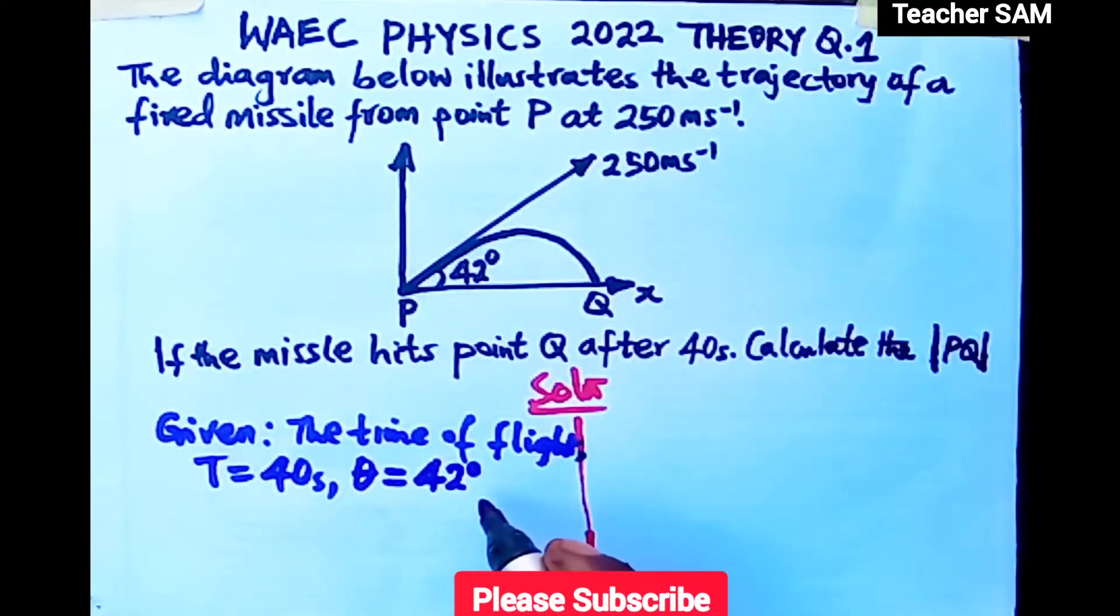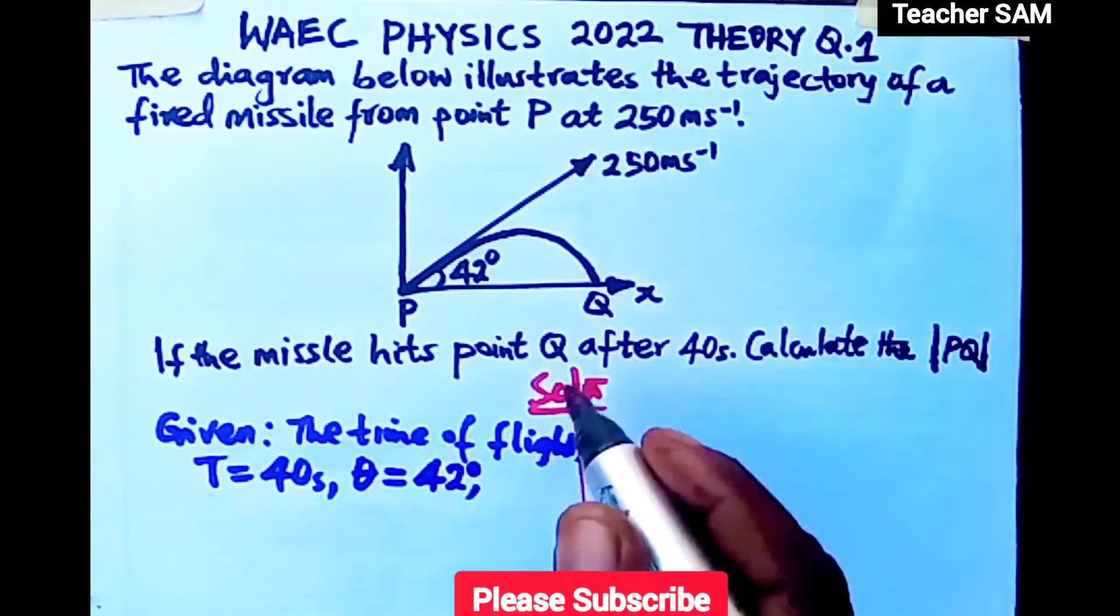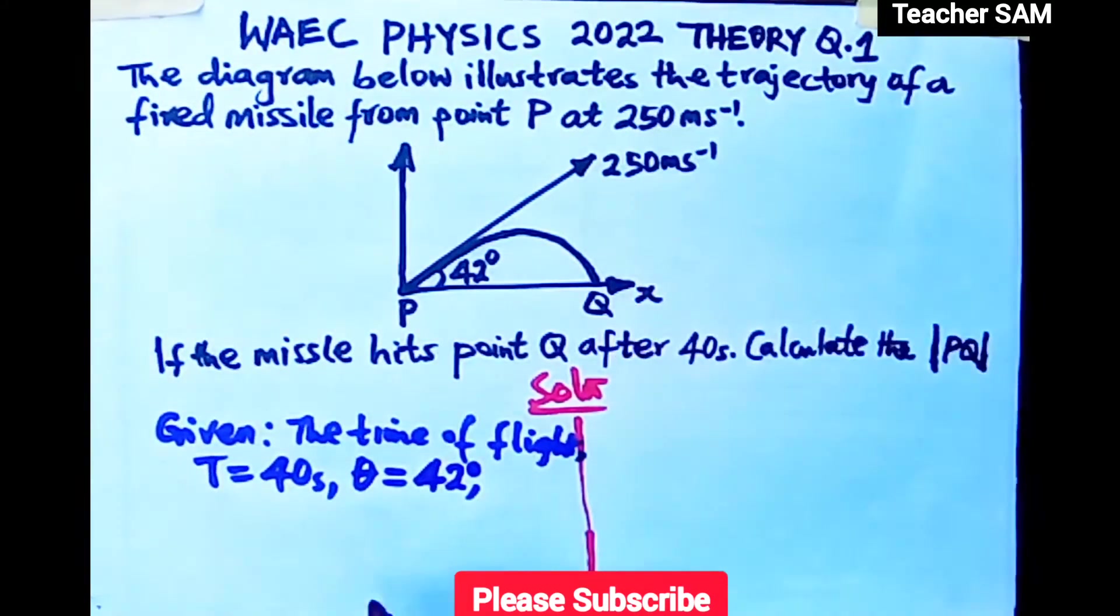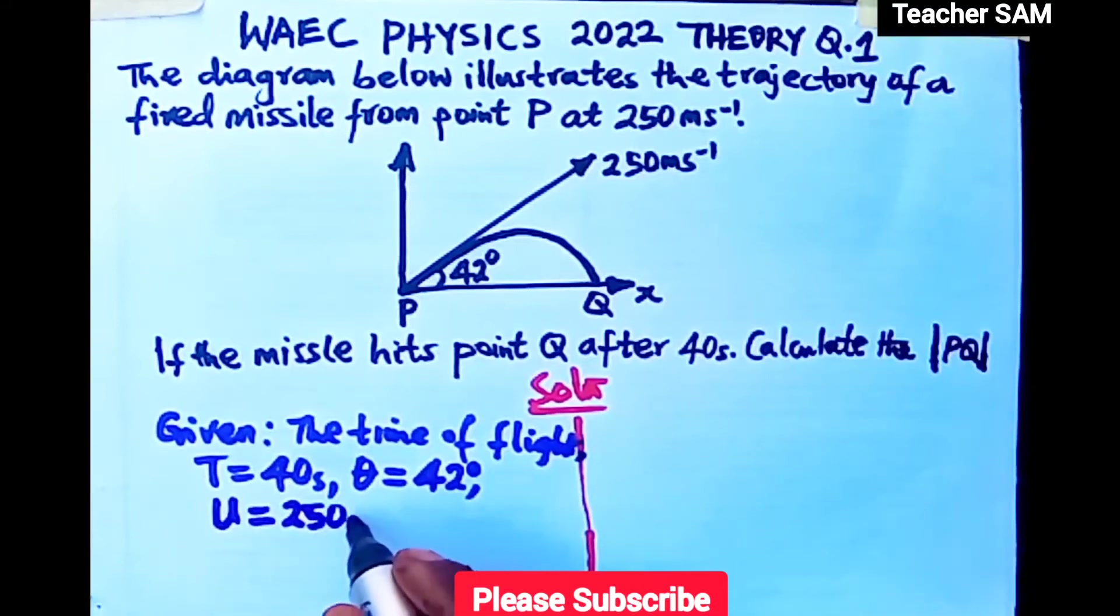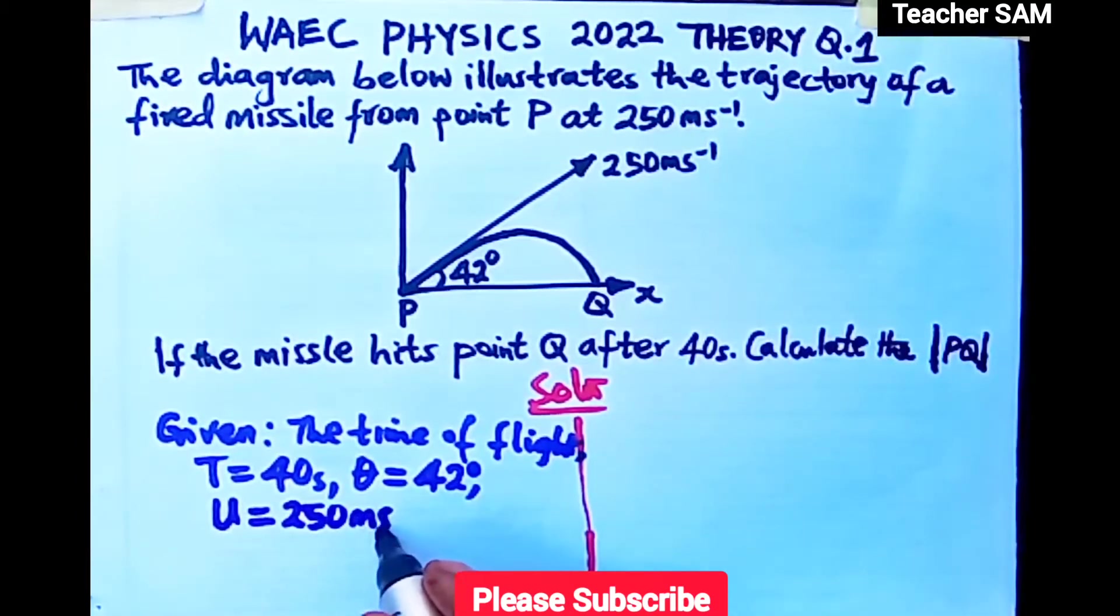We are also given a velocity U of 250 meters per second.